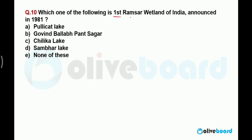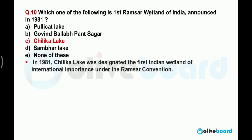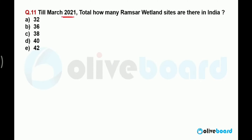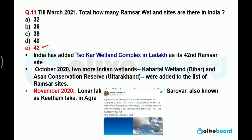Which was the first Ramsar wetland of India? The Ramsar Convention was announced for the protection of wetlands in India and in the world. The first Ramsar site from India was Chilka Lake, announced in the year 1981. Till March 2021, there are a total of 42 Ramsar wetland sites in India. The 42nd and most recent one is Tso Kar Wetland Complex in Ladakh.